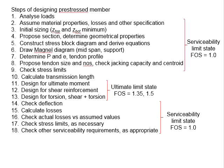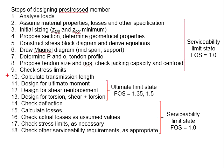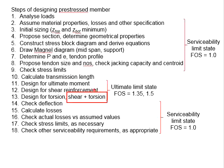In the previous videos we discussed the steps of designing a prestressed member, starting with checking stresses within the serviceability limit state, then proceeding to design for the ultimate limit state. So far we have covered shear reinforcement and torsional reinforcement. There is one more check needed: the combined actions of shear and torsion. In this video, we will discuss how to check for shear and torsion in a prestressed concrete member.